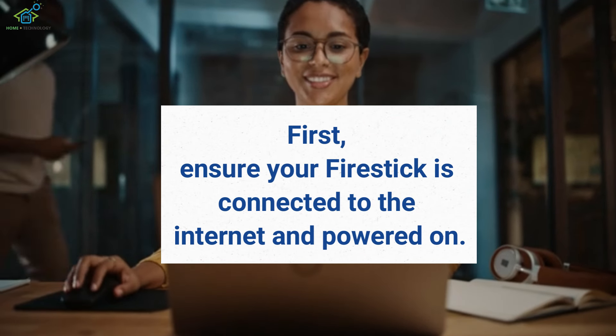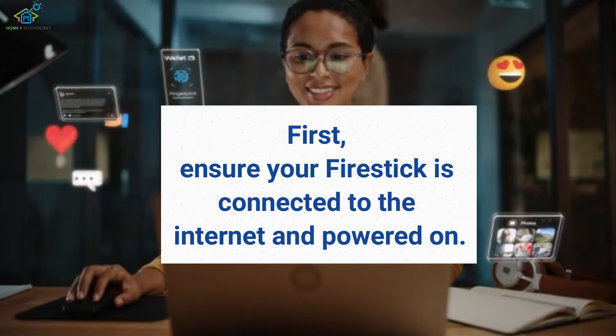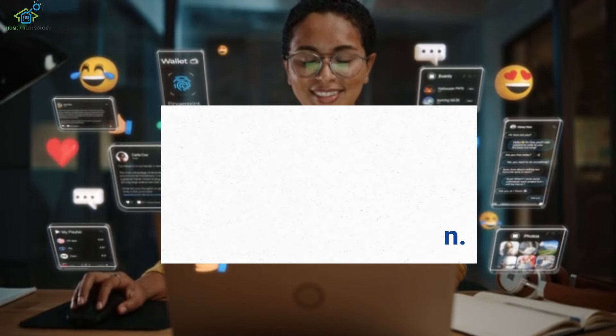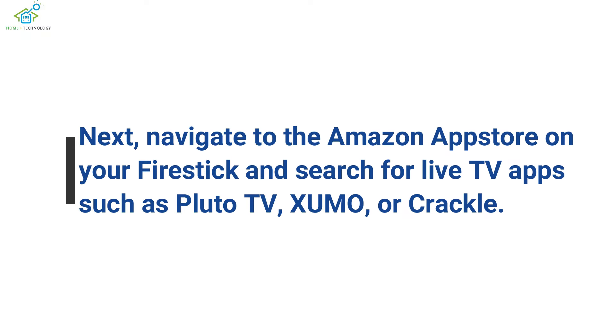First, ensure your Fire Stick is connected to the internet and powered on. Next, navigate to the Amazon App Store on your Fire Stick and search for live TV apps such as Pluto TV, Zumo, or Crackle.